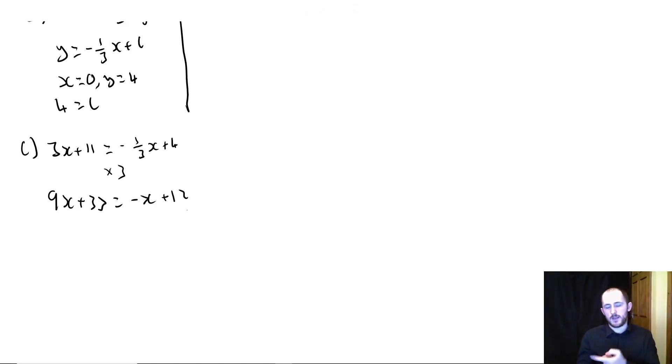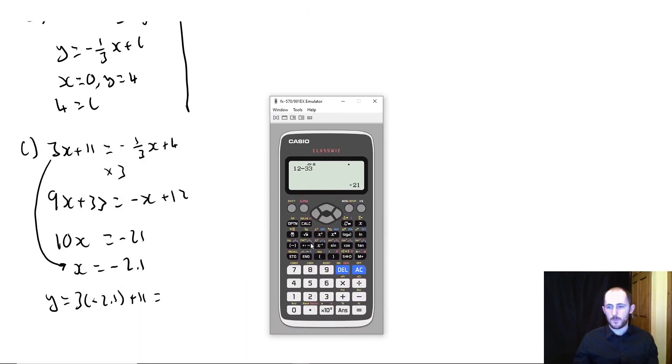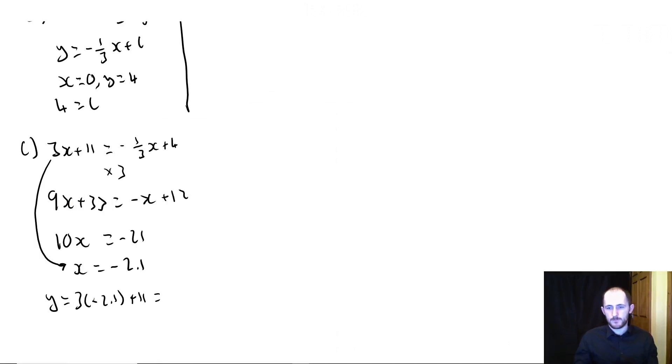So 9X plus 33 equals minus X plus 12. X on the left and the numbers on the right. So we have 10X equals, and then we're going to minus 33. So 12 minus 33 would be negative 21. So then X is equal to minus 2.1. Now we sub that in to find our value for Y. It doesn't matter what equation we sub it into. So let's just say that Y equals 3 times negative 2.1 plus 11, which gives me 4.7. So my coordinates are minus 2.1 and 4.7. And that brings us to the end of the coordinate geometry section.